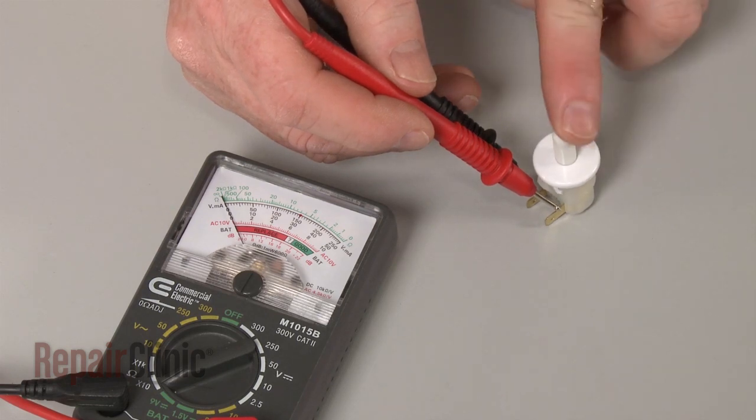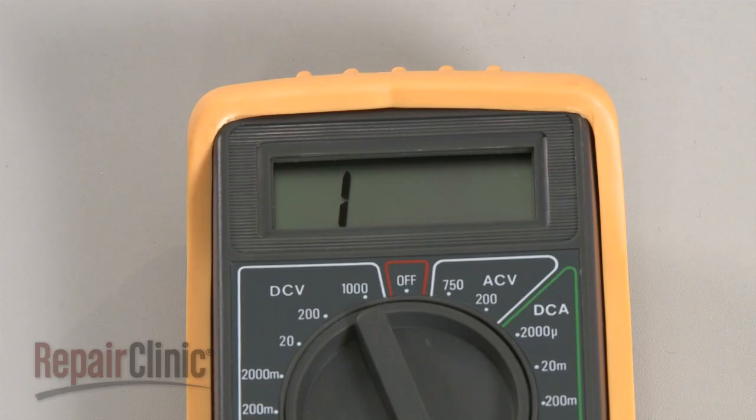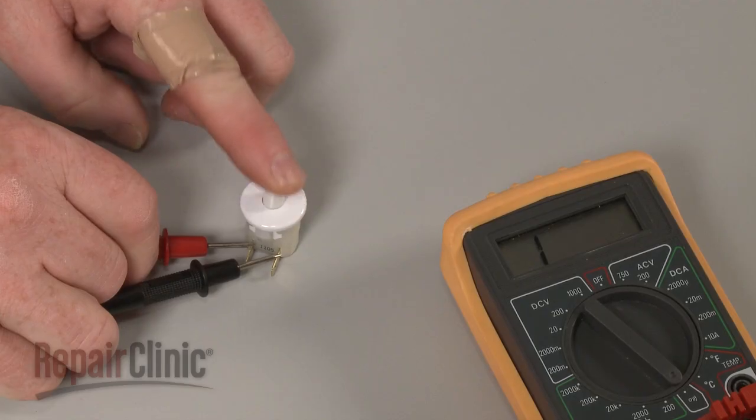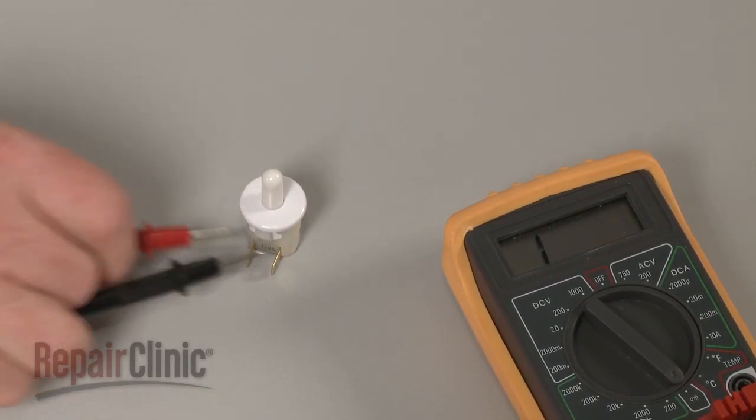However, if the meter's needle does not move or the digital display does not change significantly, there is no continuity, which means the switch has failed.